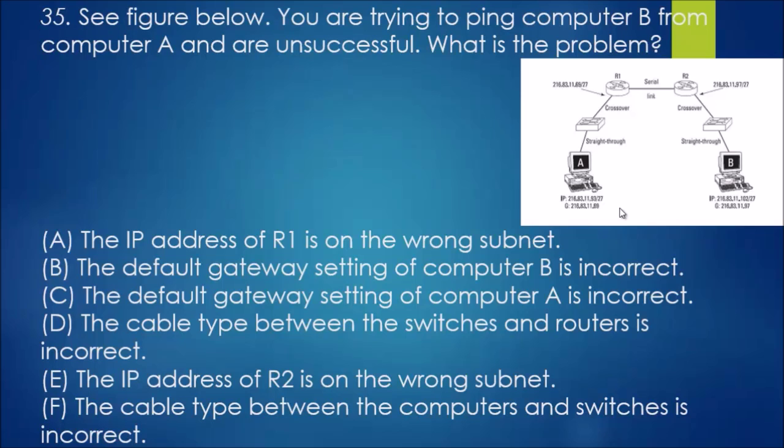But the answer on this one: you look at over here at the switch, and I've got the router up here. They're using a crossover cable. Now they're not the same types of devices. You've got a switch and a router using a crossover cable, which is a no-no. It should be a straight-through cable. So the answer to this one would be D: the cable type between the switches and routers is incorrect.